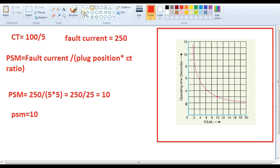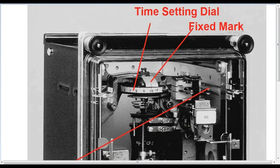Time setting multiplier (TMS) — the time setting multiplier determines the operating time of the relay. You can adjust the TMS: you can have a disk setting and contact arrangement. Now you can set the time setting.